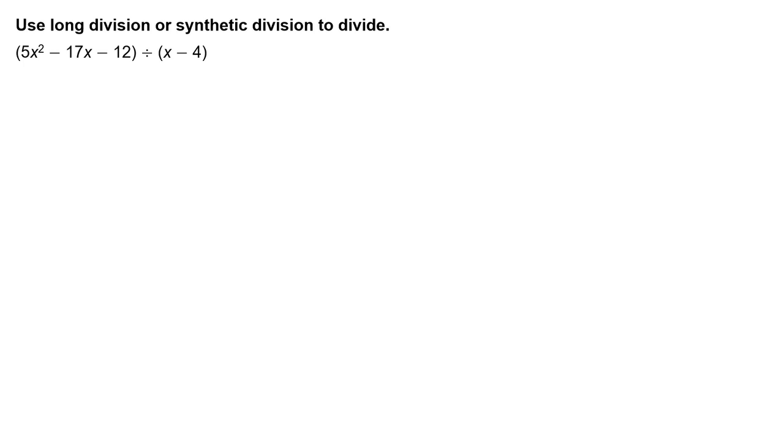Use long division or synthetic division to divide the quantity 5x squared minus 17x minus 12 divided by the quantity x minus 4.